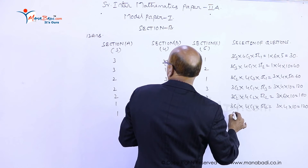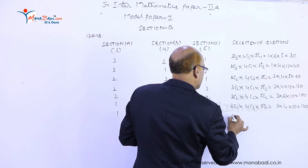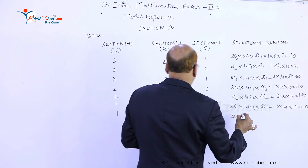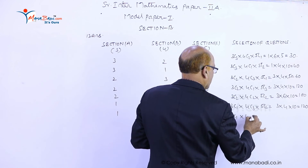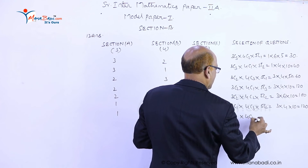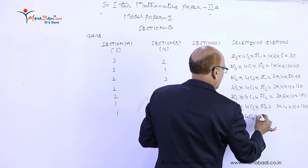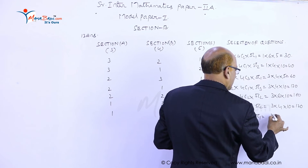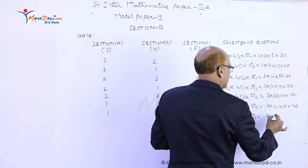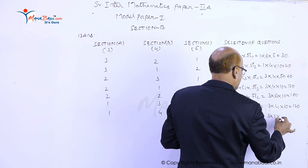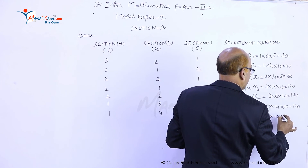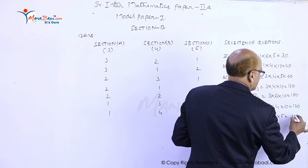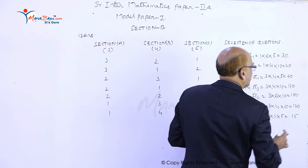Next: one question from A, all four questions from B, and one from C. That is 3C1 into 4C4 into 5C1. 3C1 is 3, 4C4 is 1, and 5C1 is 5. So 3 into 5 equals 15.